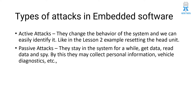Types of attacks in embedded software: The first is an active attack. An active attack is a direct attack where the attacker enters into the system and spoils it — they change the behavior of the system and we can easily identify it. For example, resetting the head unit by deleting all the user's files. A passive attack is where they stay in the system for a while, read data, and spy on all user activities, collecting personal information, vehicle diagnostics, credit card information, and whatever else they can gather.